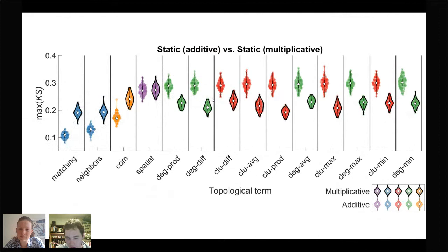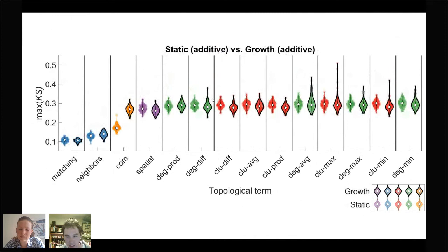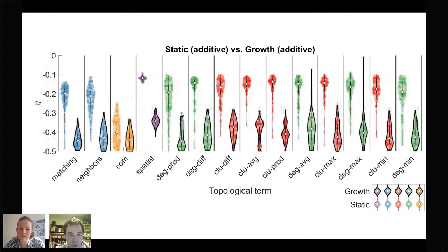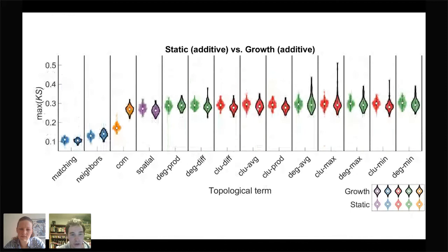When comparing static versus growth models, there is very little differentiation — static and growth cases produce very similar fits. Looking at the eta parameters, growth models show a much stronger decay, which counteracts the fact that distances in the growth model are smaller. So the model compensates for the growth effect. In summary, additive models outperform multiplicative ones, but static and growth models perform very similarly in terms of fitting topological distributions.